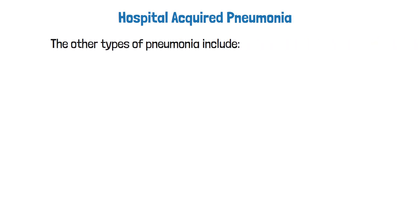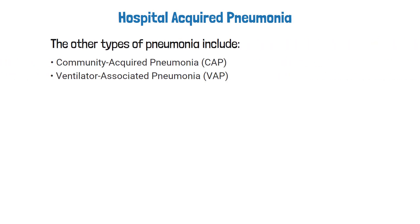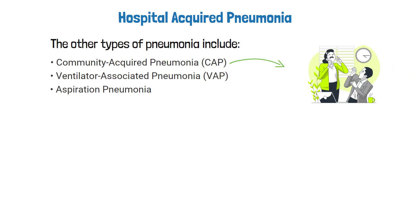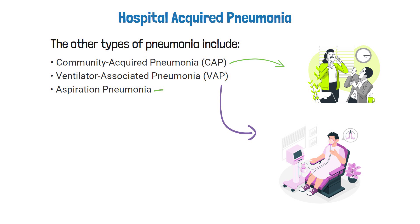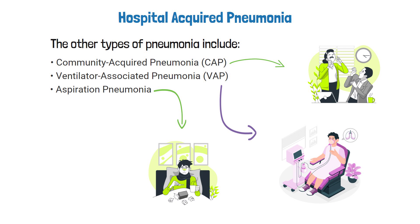The other types of pneumonia include community acquired, ventilator associated, and aspiration pneumonia. The specific type of pneumonia is classified according to how the patient acquires the disease. Community acquired pneumonia is when the patient gets it outside of the hospital. Ventilator associated pneumonia is when it's acquired while the patient is on the mechanical ventilator. Aspiration pneumonia is acquired when a patient aspirates bacteria into the lungs, usually from food, saliva, or stomach acid.